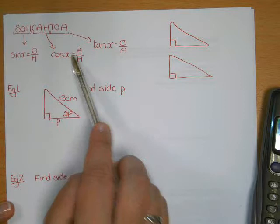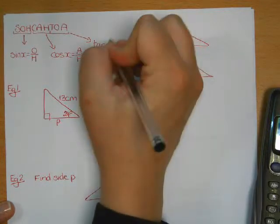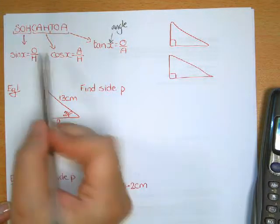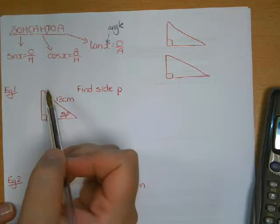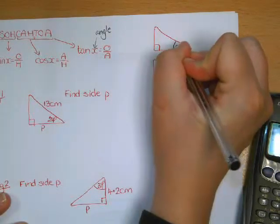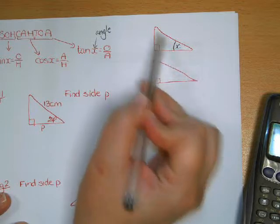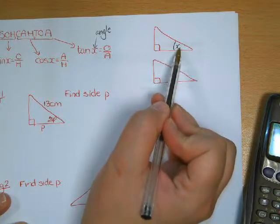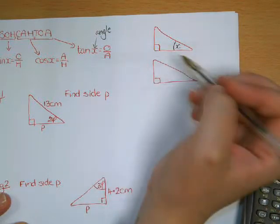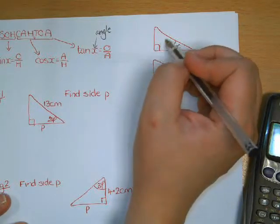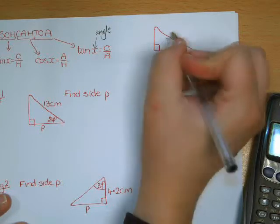The x in each of these is always the angle in the triangle that you're using. You always use one of the two acute angles — you don't use the right angle. The hypotenuse of the triangle is always the longest side, the same as in Pythagoras. If you go across from the right angle, that tells you which one is the hypotenuse.